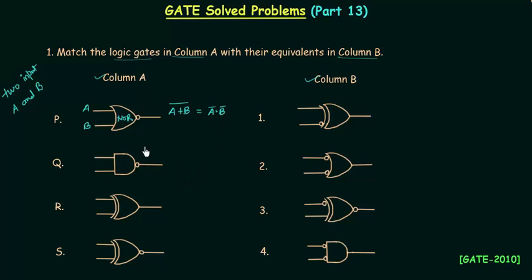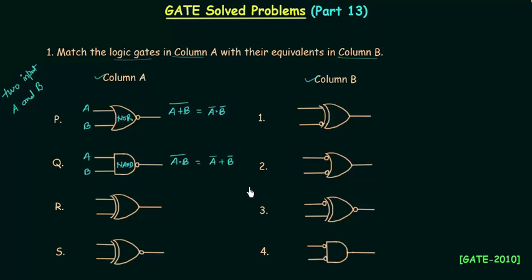The second gate is a NAND gate with inputs A and B. The output is A AND B, complemented. Using De Morgan's law we get A complement OR B complement.